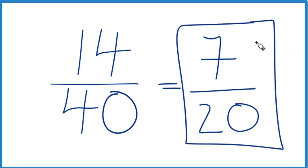In answer to our question, the fraction 14 fortieths is equal to 7 twentieths. It simplifies down to 7 twentieths. This is Dr. B. Thanks for watching.